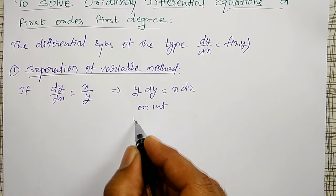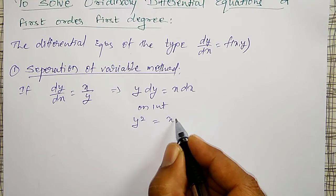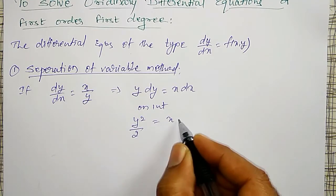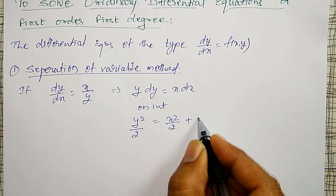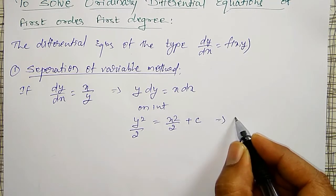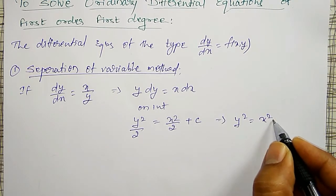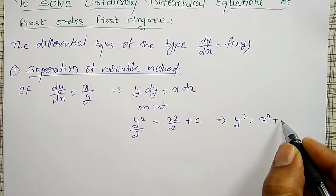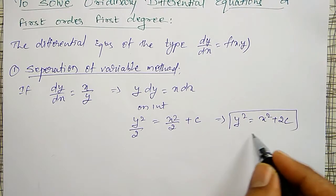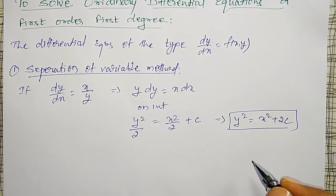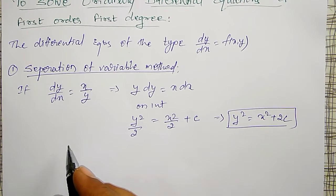On integration, I am going to get y squared divided by 2 equal to x squared divided by 2 plus constant c, which implies y squared equal to x squared plus 2c. This is the solution. This method is known as separation of variable method.